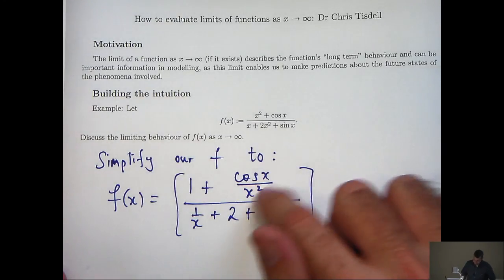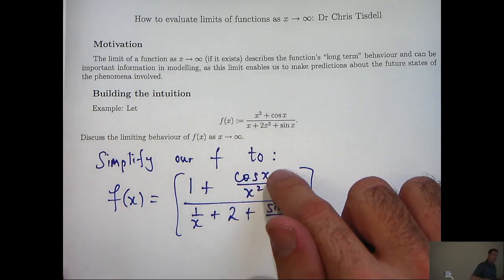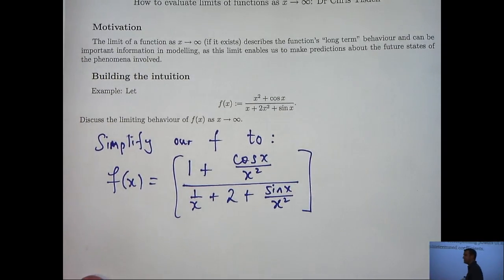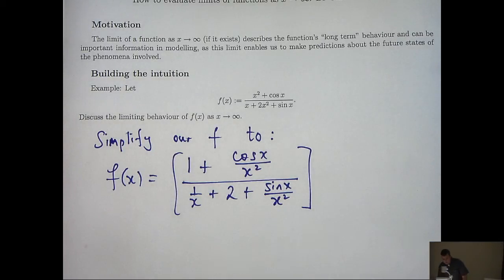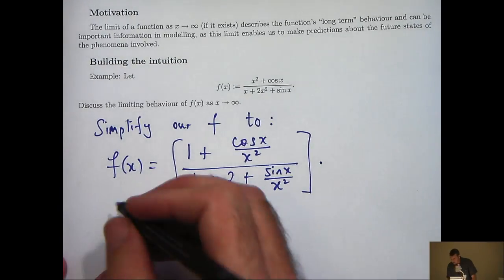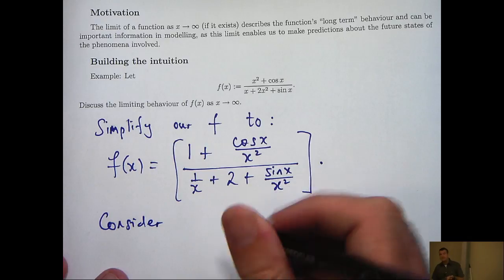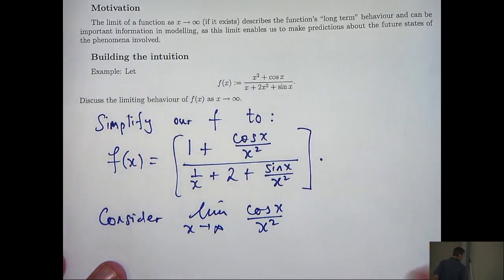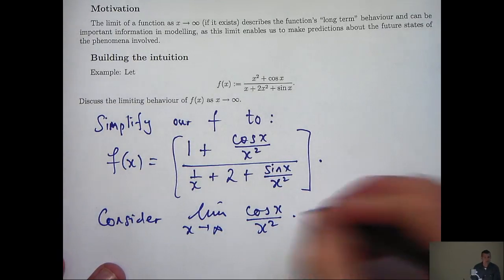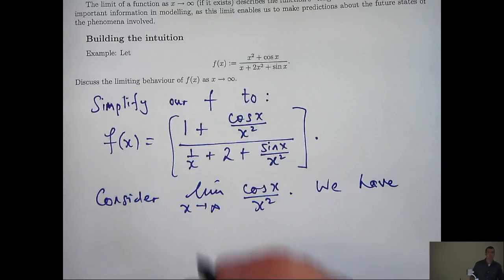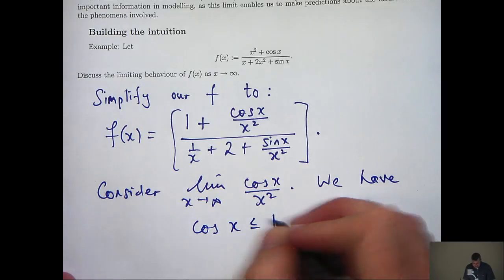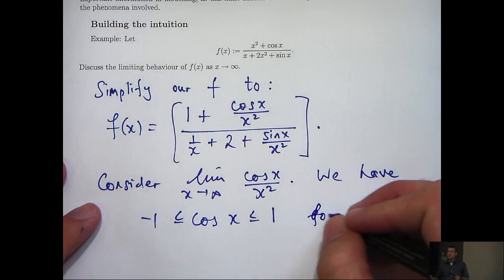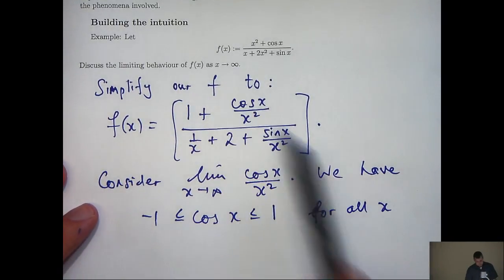You may think you already know the limit of those terms as x goes to infinity, because x² has to dominate cos(x) when x is large, and similarly x² has to dominate sin(x) when x is large. That's true, but let's actually prove it. We think the limit of cos(x)/x² is going to be 0. To prove that, I can use the following important inequality: cos(x) just oscillates between −1 and 1 for all x. We're only interested in the case when x is large and positive, but this holds for all x.